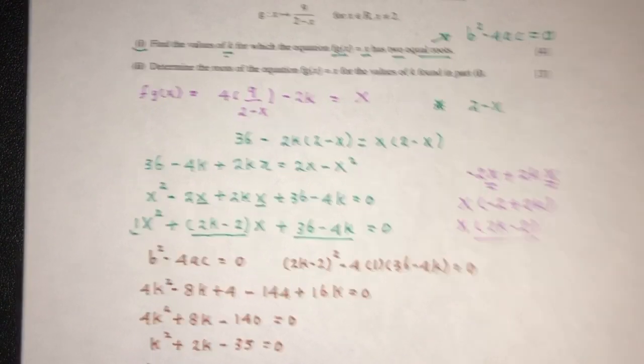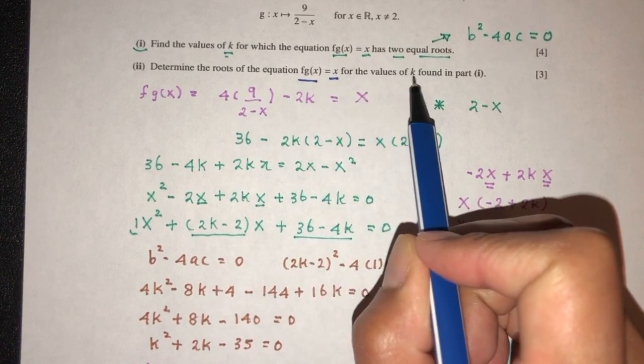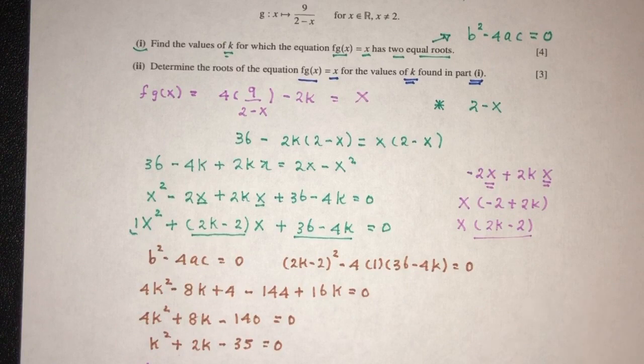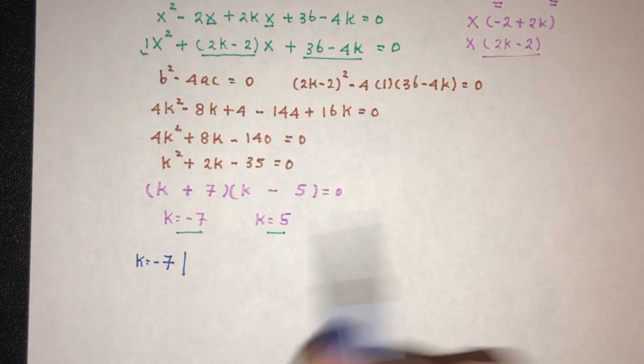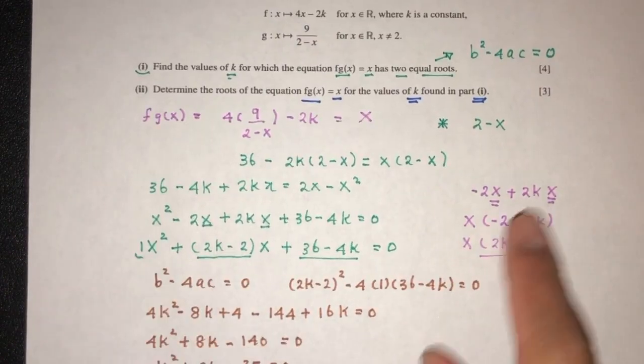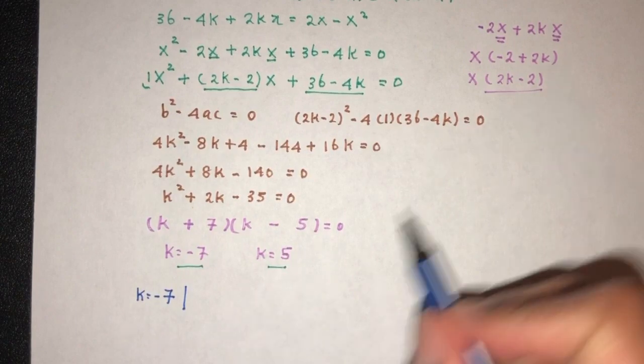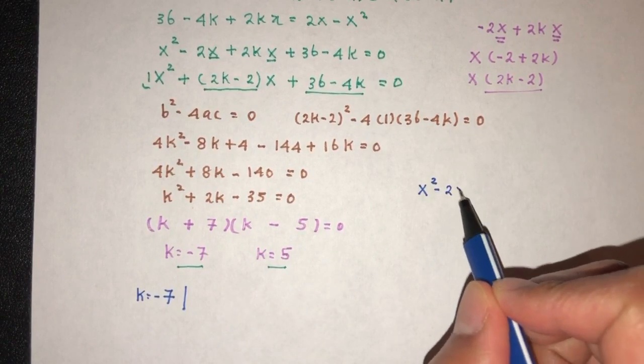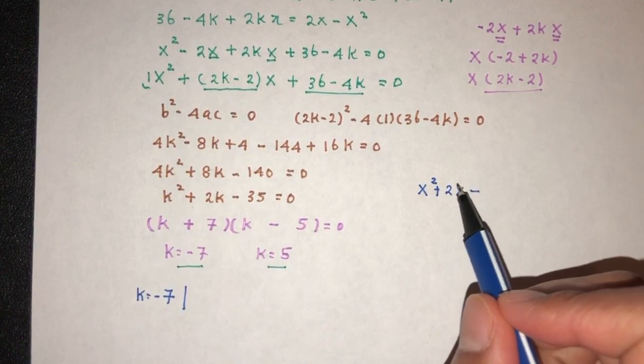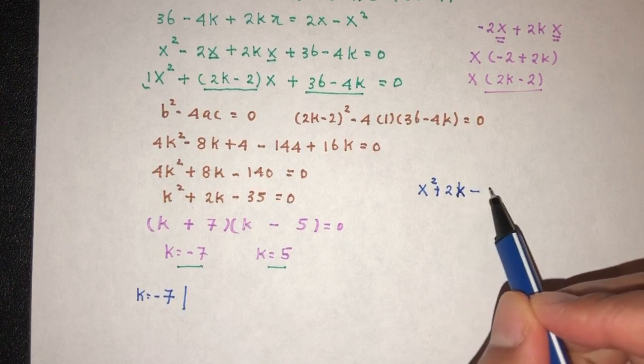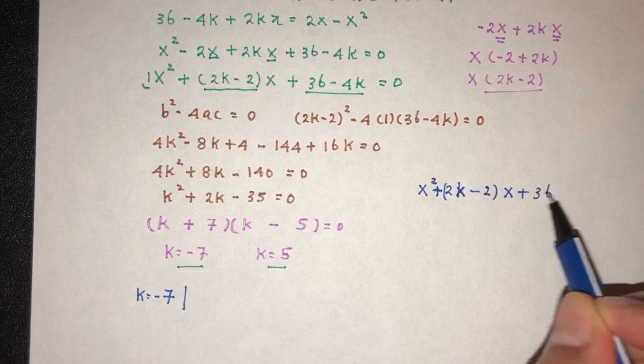Now part 2, determine the roots of the equation for the values of k you found in part 1. So let's find the values of x. Now when k is equal to minus 7, for example, I will have my equation over here. So let me write this down. That will be x² minus 2x. So let me write this one down, it's easier to work with. So plus (2k minus 2)x here, plus 36 minus 4k.